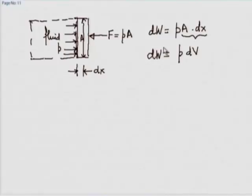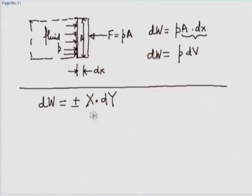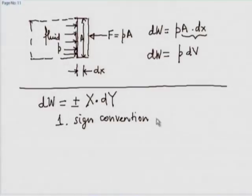Now I have four illustrations, and you will notice that all four end up with dW being of the kind x·dy, with a plus or minus sign. A few things to note: first, there is a sign convention involved — sometimes we wrote a positive sign, sometimes a negative sign, sometimes a negative-negative sign.